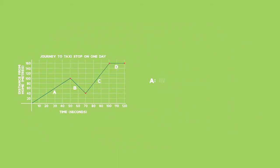Section A: Gradient M equals the change in distance over the change in time, which equals 100 minus 0 over 50 minus 0, which is 2. Ivan's speed is 2 meters per second when walking to the taxi stop.